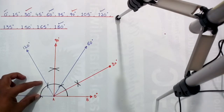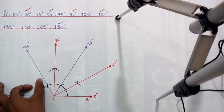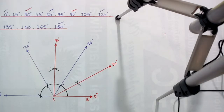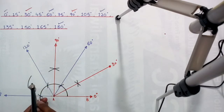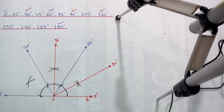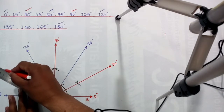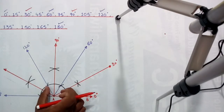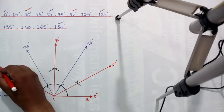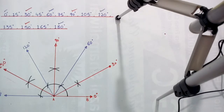Now divide this 60 degree angle into two equal parts to find 150 degrees. The half equals 30 degrees, and 30 plus 120 equals 150 degrees. Put the needle on this point and draw an arc, then put the needle on the next point and draw a second arc. Join point A with this point — 120 plus 30 equals 150 degrees.